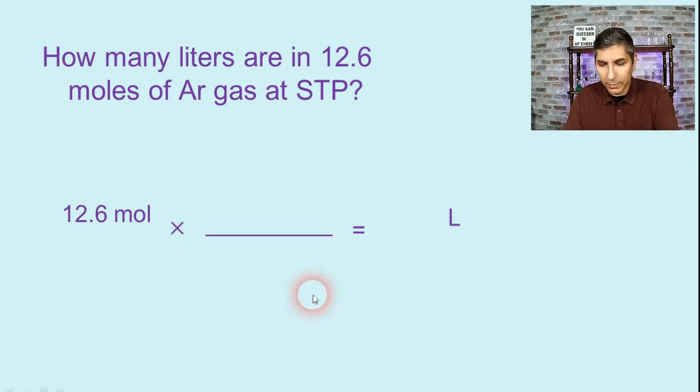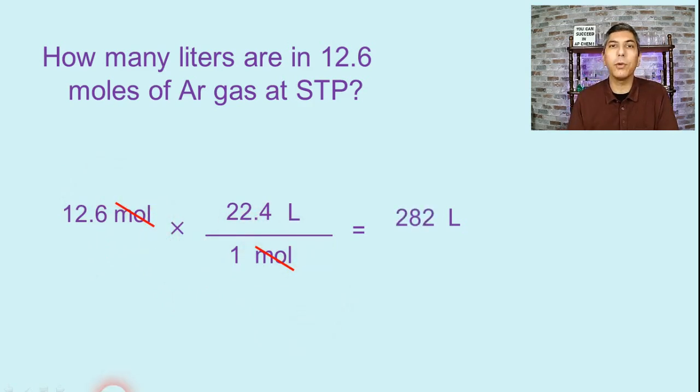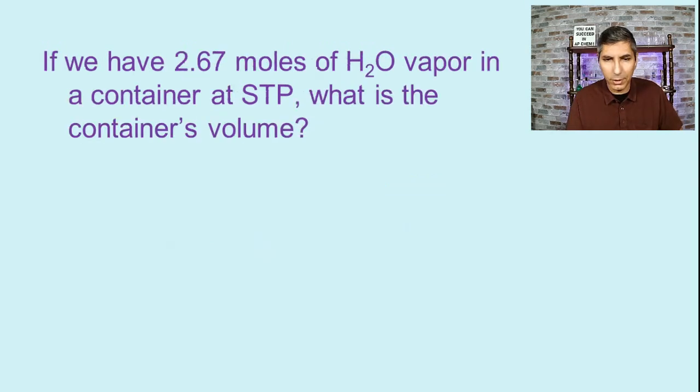Now we can fill in some numbers. There are 22.4 liters in one mole of gas at these conditions. Now I can cancel moles top and bottom. On my calculator, I'll take 12.6 times 22.4, and I find that the answer is about 282 liters. So that's the volume of 12.6 moles of argon at STP.